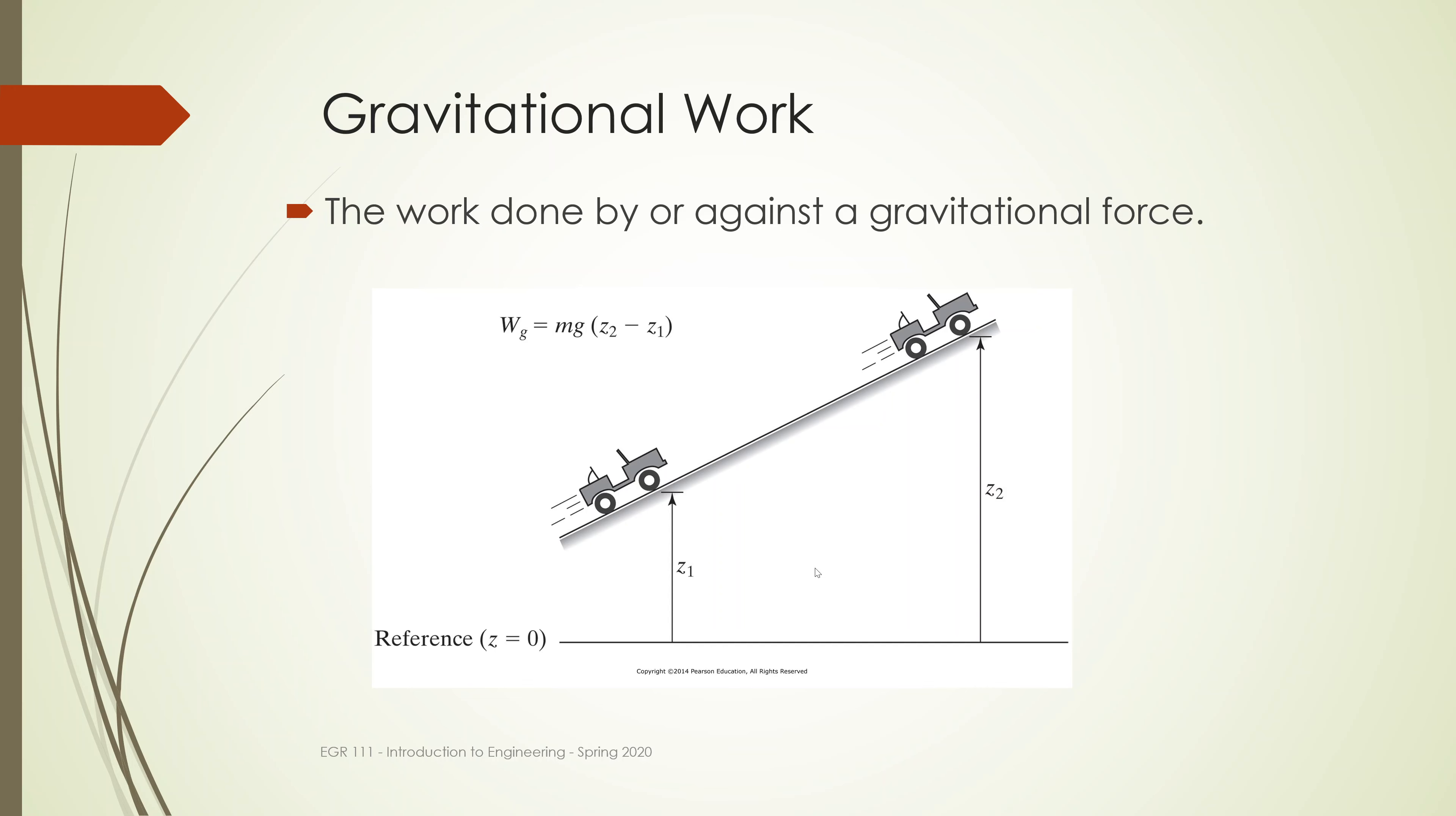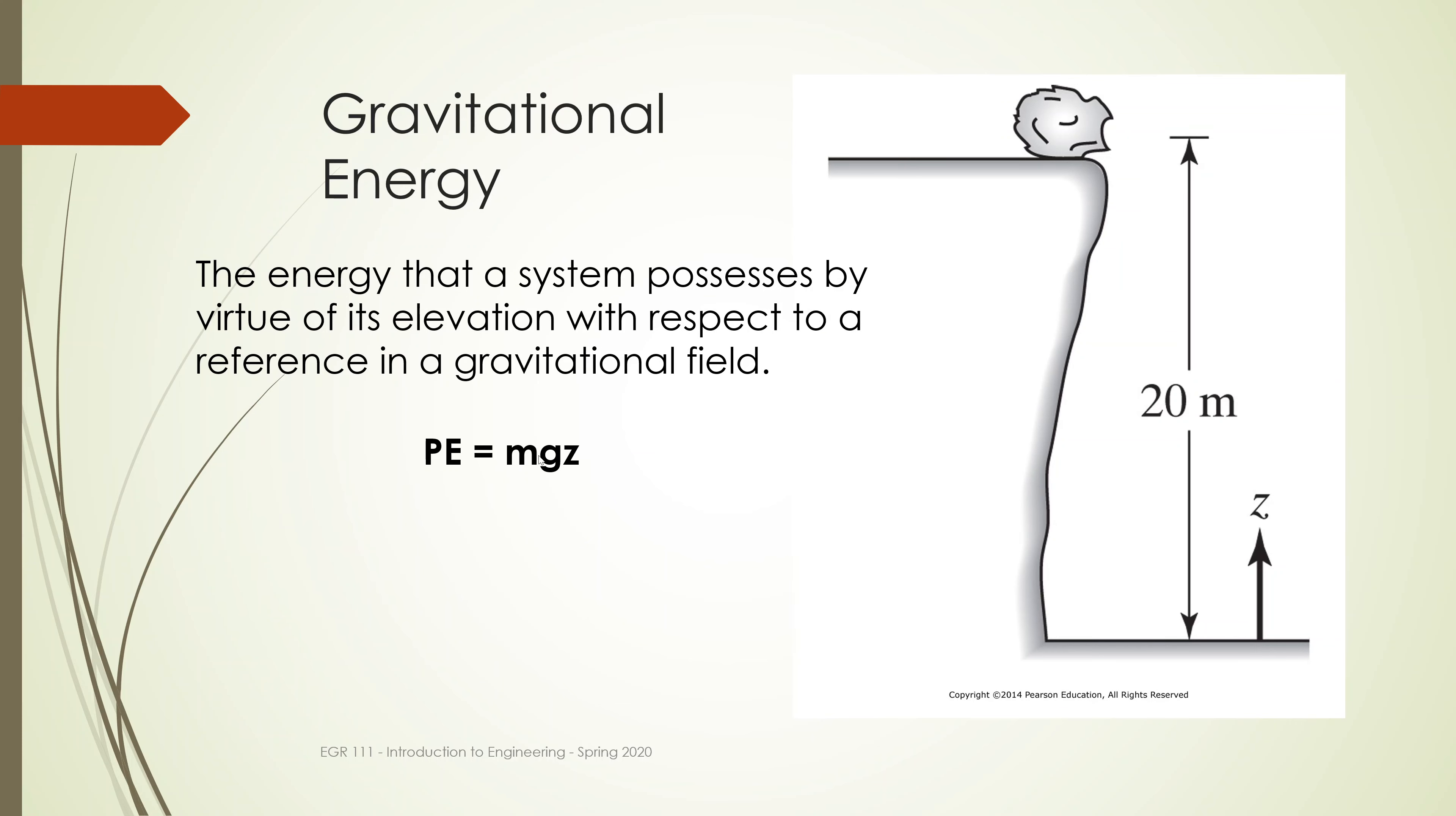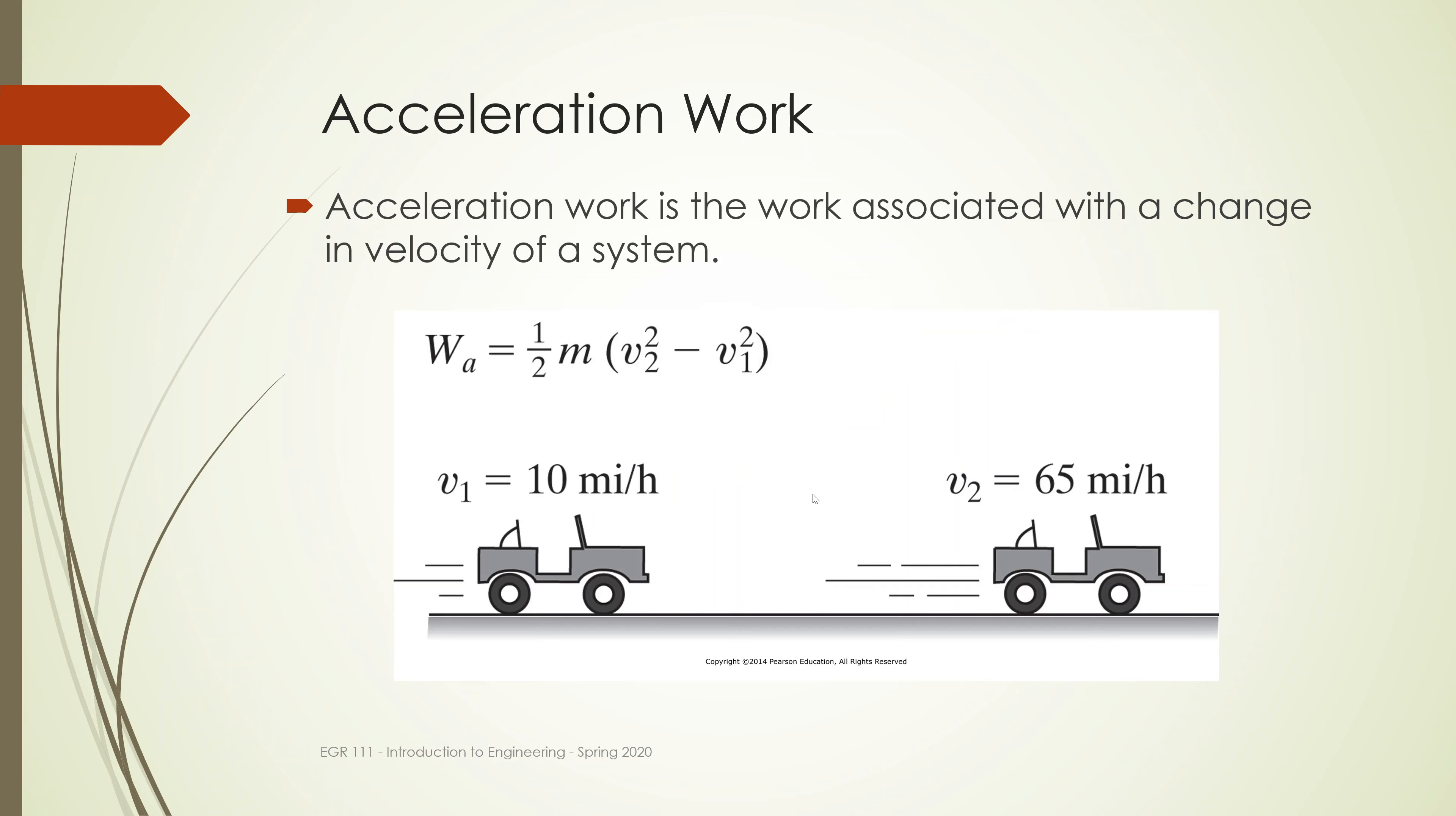The next one is gravitational work. You do work to lift the car from this point to this point. The work done against gravity is mg times the displacement—here's my mg, here's z2 which is the final position, and here is the initial position. If you look back at our gravitational energy equation, it's essentially the same equation. This is the potential energy, and here is the work done against the gravitational force.